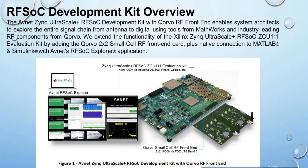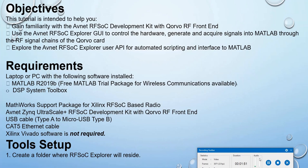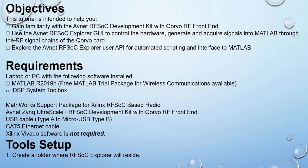This tutorial is intended to help you gain familiarity with the AppNet RF SOC development kit with CORBO RF front-end, use the AppNet RF SOC Explorer GUI to control the hardware, generate and acquire signals in MATLAB through the RF signal chain of the CORBO card, and explore the AppNet RF SOC Explorer user API for automated scripting and interface to MATLAB.